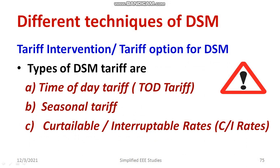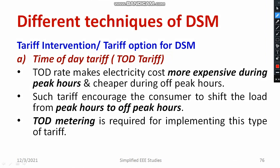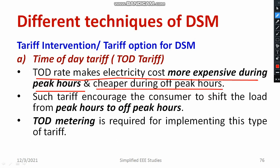Let us have a brief discussion on these three types of tariff. What is time of day tariff? The cost of electricity varies with respect to time. If you consume electricity during peak hours, you are charged more. With the help of a TOD meter, you can identify this. TOD rates make electricity cost more expensive during peak hours rather than off-peak hours, and the cost is very cheap during off-peak hours. It encourages usage of electricity during off-peak hours instead of peak hours, and customers will obviously shift their load from peak hours to off-peak hours to save cost.